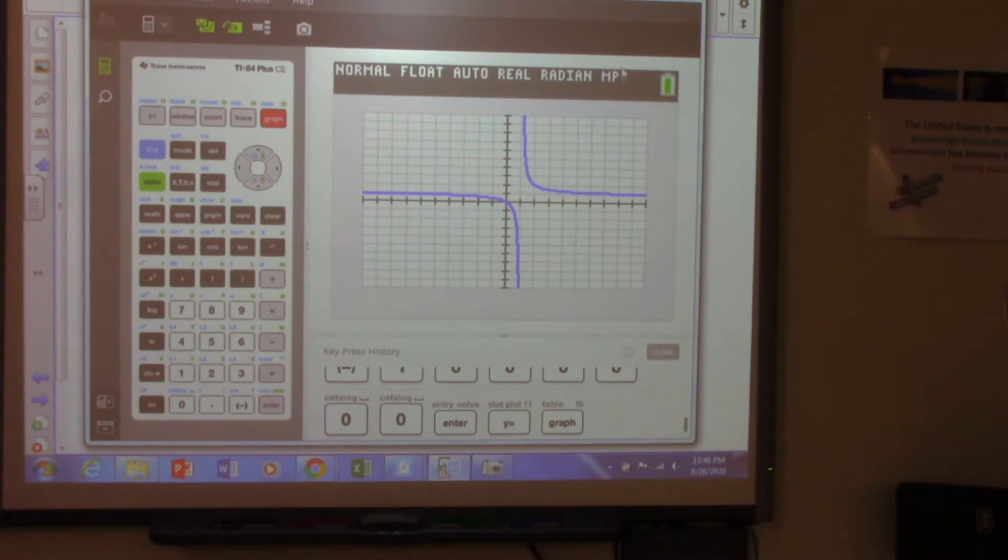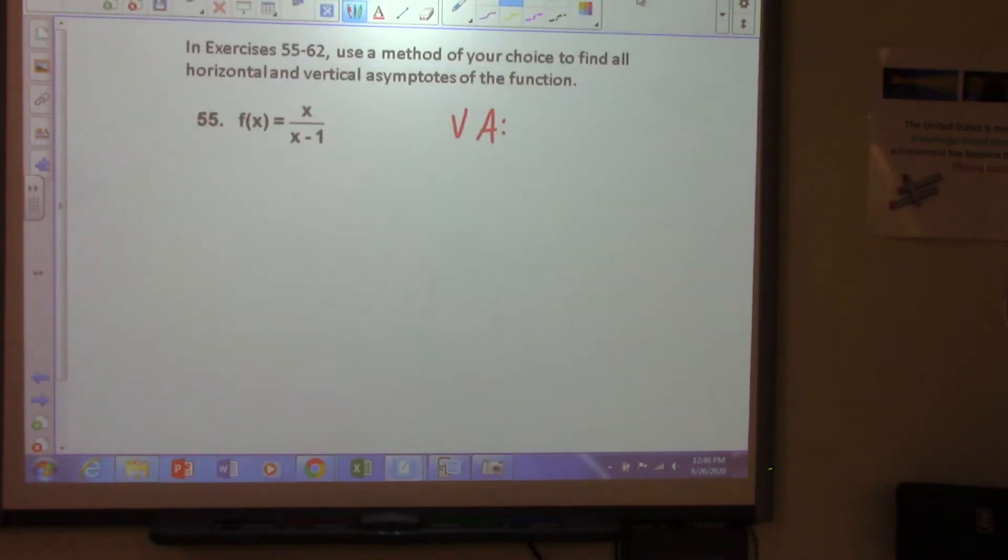So what would be the vertical asymptote for this function? What is that? One? X equals one. Okay, Carmen said one, but it's going to be x equals one. And that's the thing about vertical asymptote equations. And what about the horizontal asymptote? Y equals one.